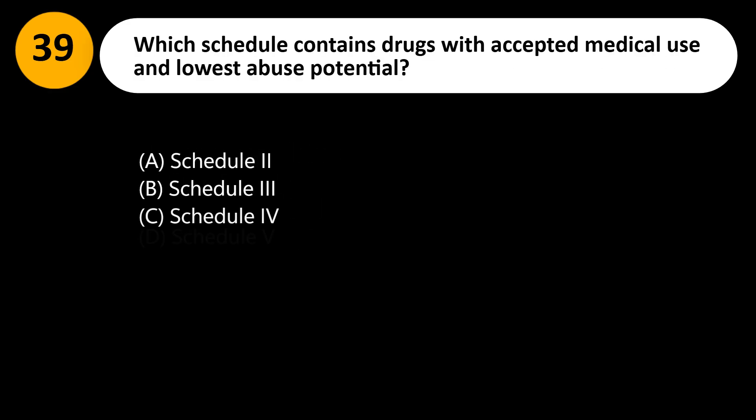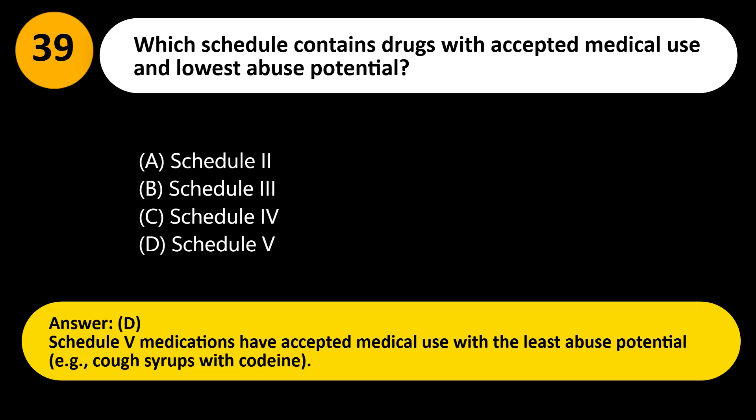Which schedule contains drugs with accepted medical use and lowest abuse potential? A. Schedule 2. B. Schedule 3. C. Schedule 4. D. Schedule 5. Answer: D. Schedule 5 medications have accepted medical use with the least abuse potential, e.g., cough syrups with codeine.